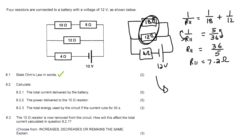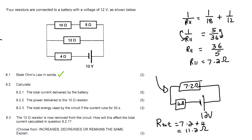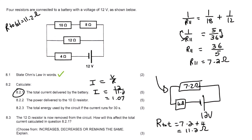Some students like to visualise it like this: we now have a circuit that looks like this, with 7.2 ohms and then 4 ohms, and those are in series. So to work out the total resistance, we say 7.2 + 4 = 11.2 ohms. That's the total resistance in the circuit. So I = V/R, and the total current is the battery voltage 12 divided by 11.2, which gives us 1.07 amps.